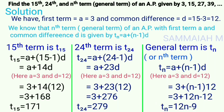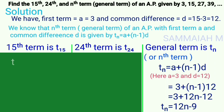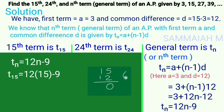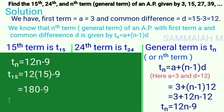Using the nth term formula as a second method, we can also find the 15th and 24th terms. With tn = 12n − 9 and n = 15: t15 = 12 × 15 − 9 = 180 − 9 = 171.